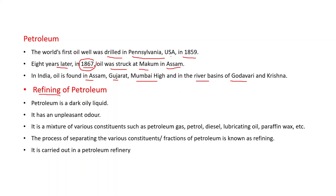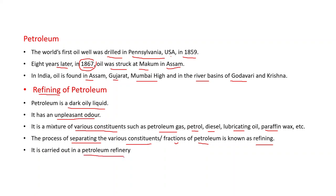Refining of petroleum: petroleum is a dark oily liquid with an unpleasant odor. It is a mixture of various constituents such as petroleum gas, petrol, diesel, lubricating oil, paraffin wax, etc. The process of separating these various constituents — also known as fractions — from petroleum is known as refining, and it is carried out in a petroleum refinery.